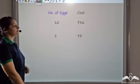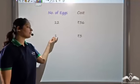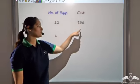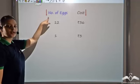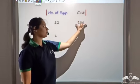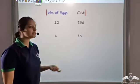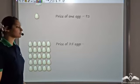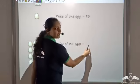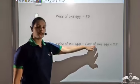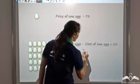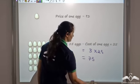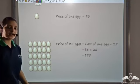Now I can find the cost of 25 eggs. For 12 eggs the cost is 36 rupees, and for one egg the cost is 3 rupees. So 25 eggs would cost the price of 1 unit multiplied by 25 — that is 3 rupees into 25 — which gives me 75 rupees. So the price of 25 eggs is 75 rupees.